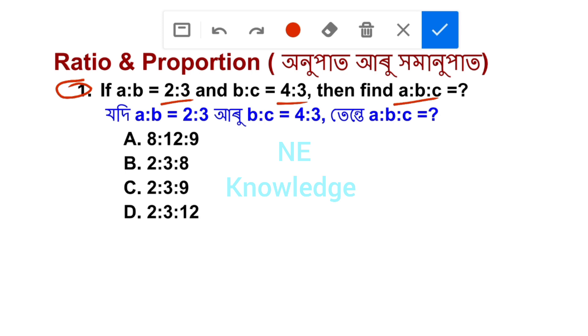So A:B is 2:3, and B:C is 4:3. To find A:B:C, we need to combine these ratios.